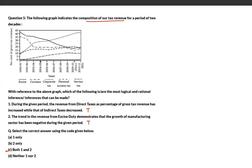The second half of statement 1 says indirect taxes have decreased. Customs duty, for example, was at 35% and has declined, so this is correct. Statement 2 says the trend in excise duty demonstrates negative growth in manufacturing. Excise duty is declining over time, indicating the manufacturing sector's share has also been declining — so both statements are correct.